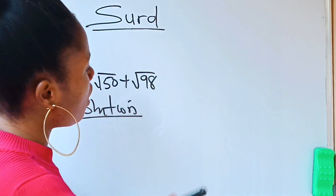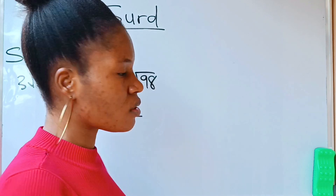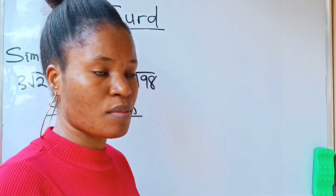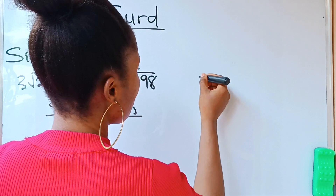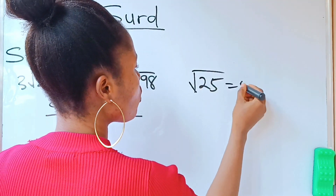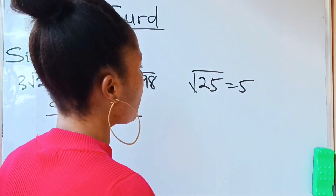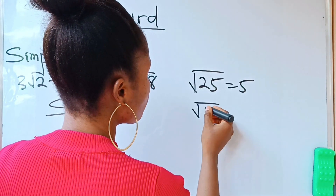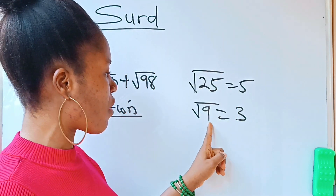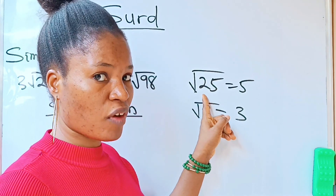What is a perfect square? A perfect square is a number that you can get its square root without a decimal — it's a whole number. For example, 25 is a perfect square because root 25 gives you 5. Similarly, root 9 is 3, so 9 is also a perfect square.